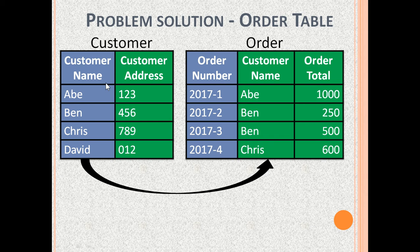Later, if we get duplicate CustomerNames, we can make CustomerName and CustomerAddress together as a primary key. The second is the order table with columns OrderNumber, CustomerName and OrderTotal. OrderNumber is the only candidate key. CustomerName depends on order number and OrderTotal also depends on order number. Once these tables are in 2NF, the issues are resolved.